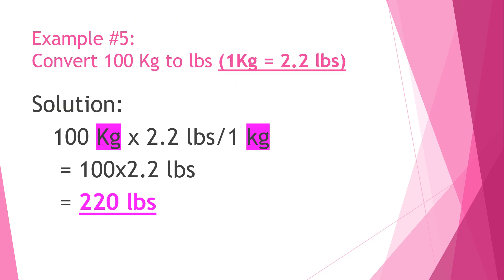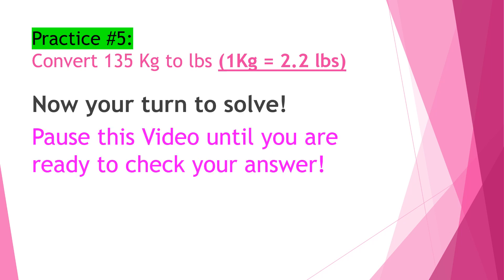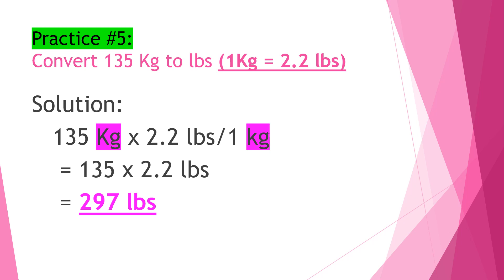Example number five: Convert 100 kilograms to pounds. Our conversion factor is 1 kilogram equals 2.2 pounds. Solution: 100 kilograms times 2.2 pounds over 1 kilogram — cancel kilograms because we need the unit pounds. 100 times 2.2 is equal to 220 pounds. Practice number five: Convert 135 kilograms to pounds, same conversion factor. The answer is 297 pounds.